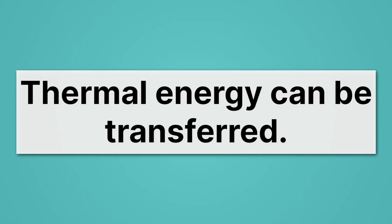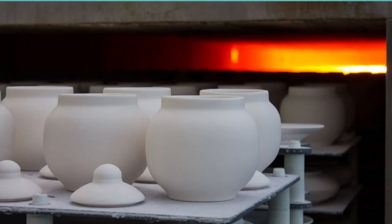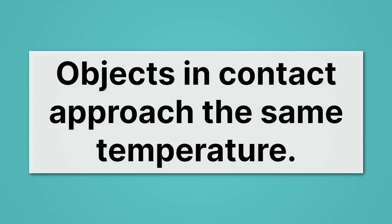It's also important to remember that thermal energy can be transferred. That is, it can go from one object to another. Take, for example, this kiln about to fire a bunch of pottery. That pottery needs to get hot so that it can have the properties that we'd like it to have when it cools back down again. And as it goes into that oven, it's going to warm because the oven's hot. We're familiar with that in everyday life. Objects in contact approach the same temperature.